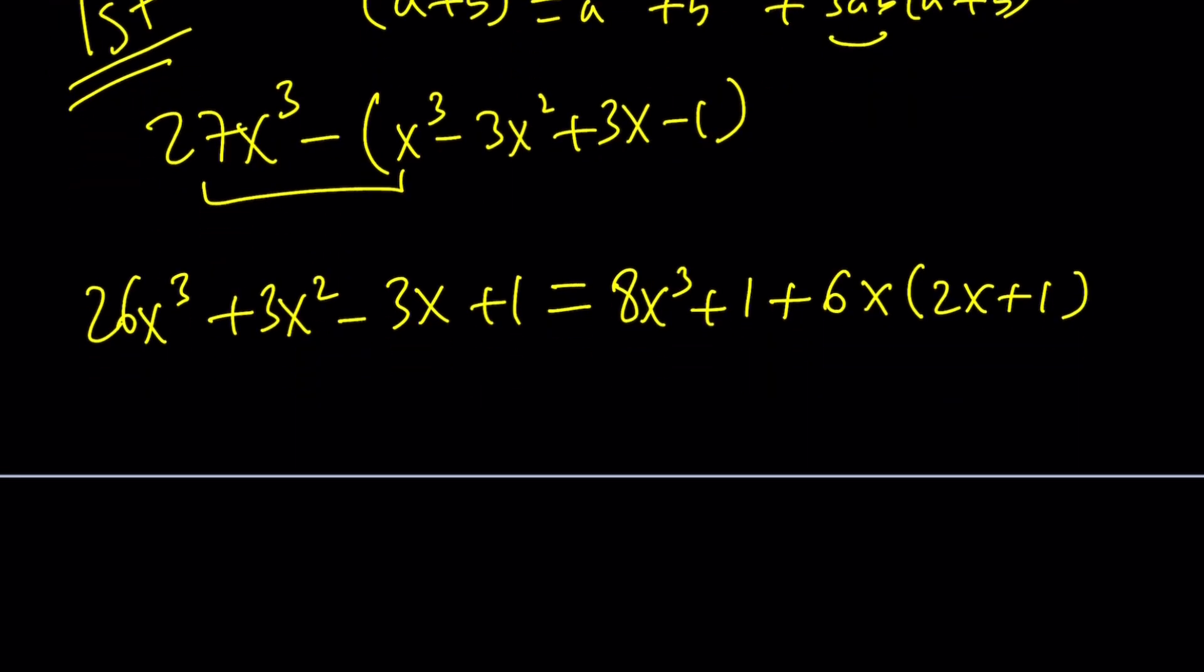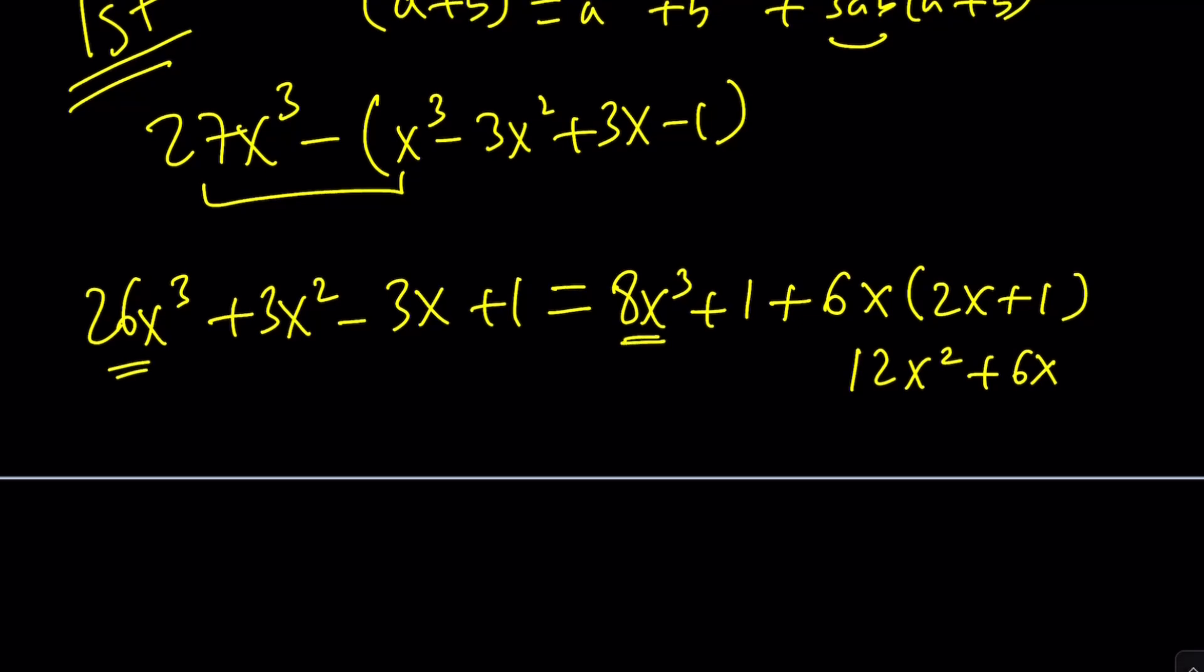And then from here, let's see what we get. This is going to be 12x squared plus 6x. And now let's go ahead and subtract 8x cubed. That's going to give us 18x cubed.